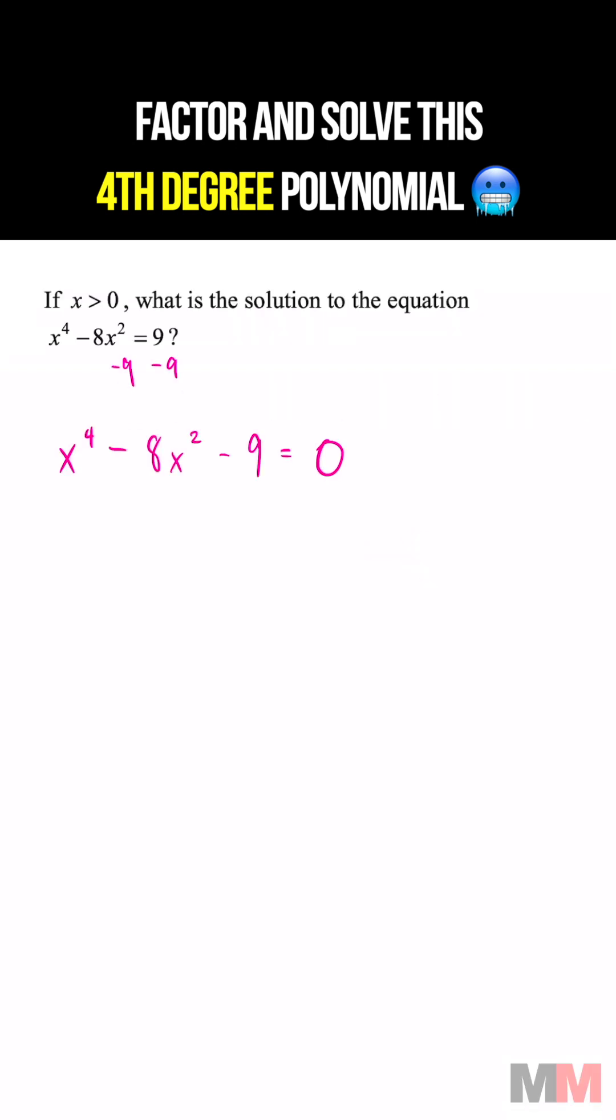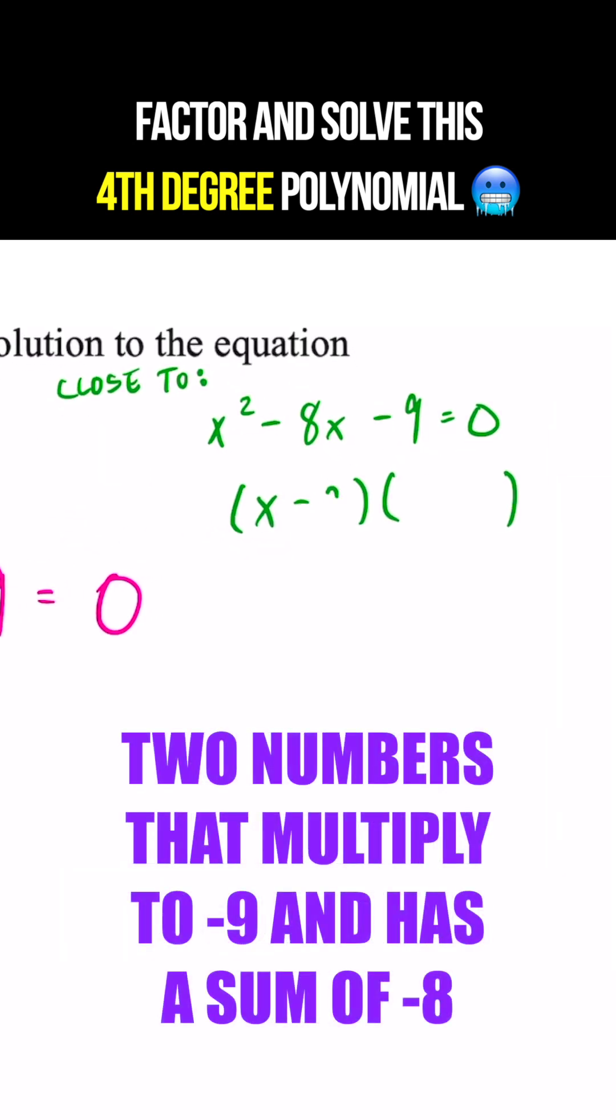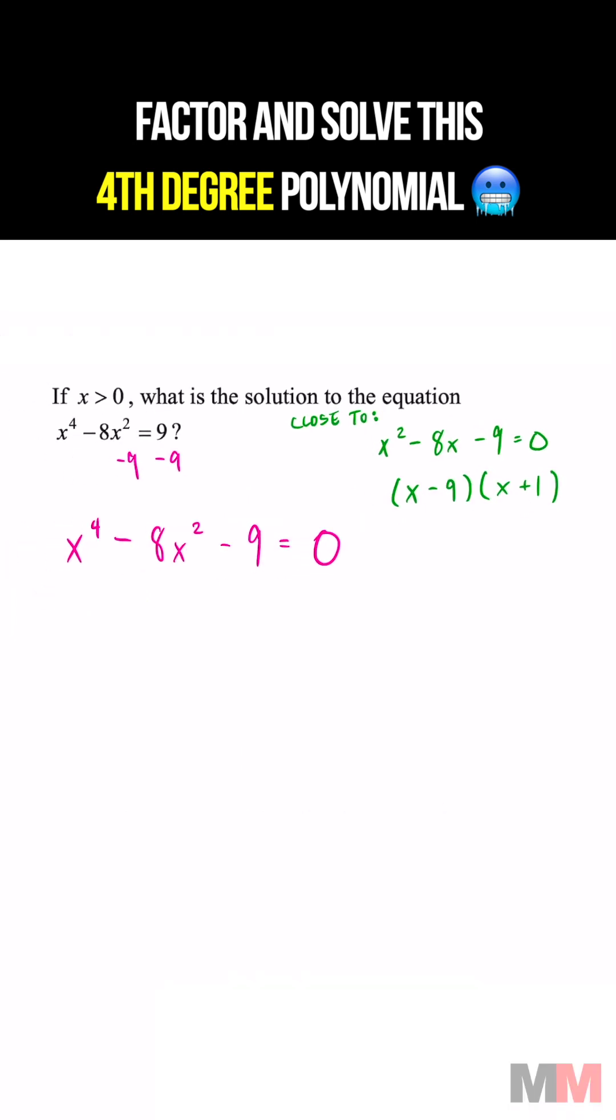It looks fairly close to x squared minus 8x minus 9, and if you were to factor that, that would get you x minus 9 and x plus 1. So this stuff in pink pretty much factors the same way, except instead of x, that's going to be x squared.